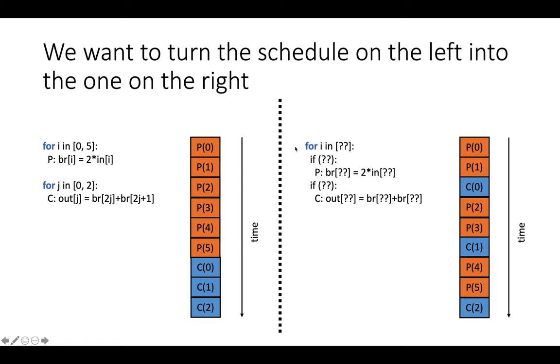What we want is the schedule on the right where we have some unknown fused loop nest where both statements have been pushed into a single loop nest with new bounds and conditions that govern when the statements execute. We've got a trace like the one shown on the far right where time goes from early on the top to late on the bottom and every single value in the consumer loop nest is produced as soon as its data dependencies have been completed.